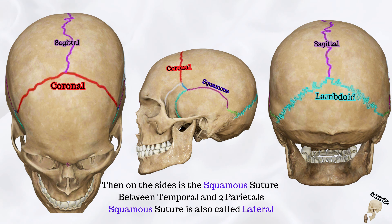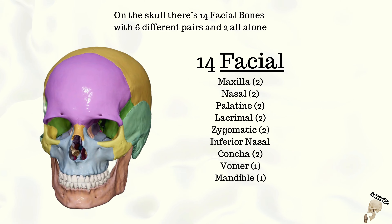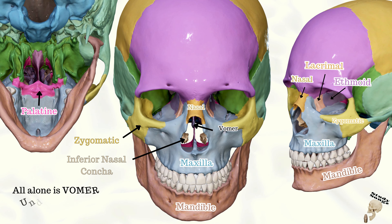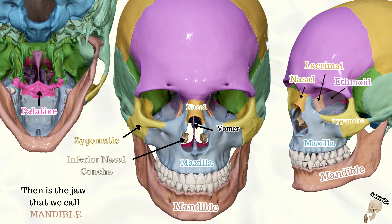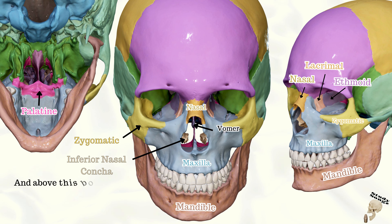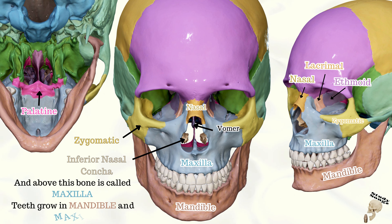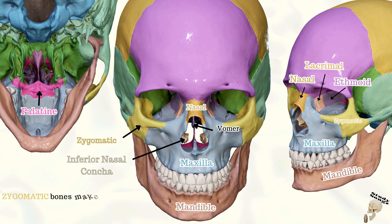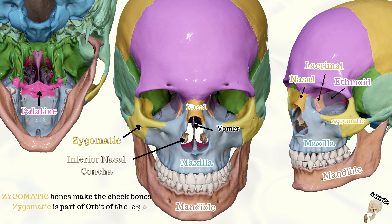Synostosis, but call it whatever. On the skull there's fourteen facial bones, with six different pairs and two all alone. All alone is the vomer bone under the nasal. Then there's the jaw that we call mandible. And the middle bone is called maxilla. Teeth grow in mandible and maxilla. Zygomatic bones make the cheek bones — zygomatic is part of the eye.